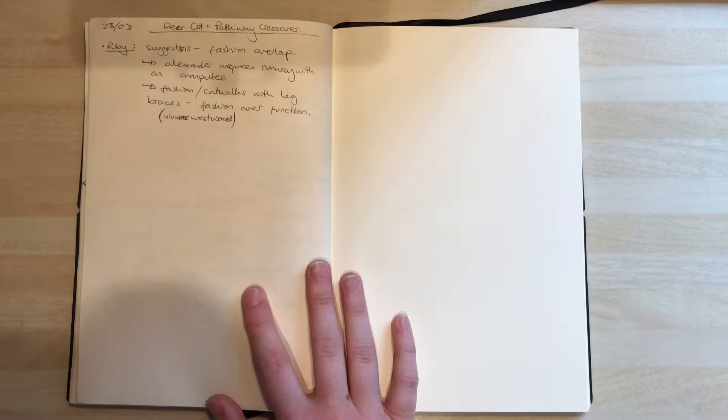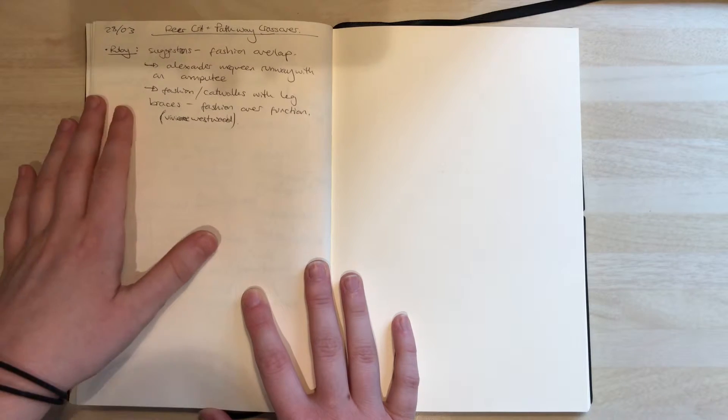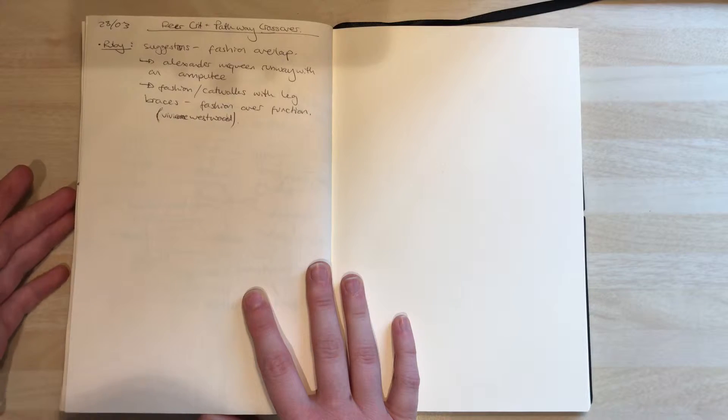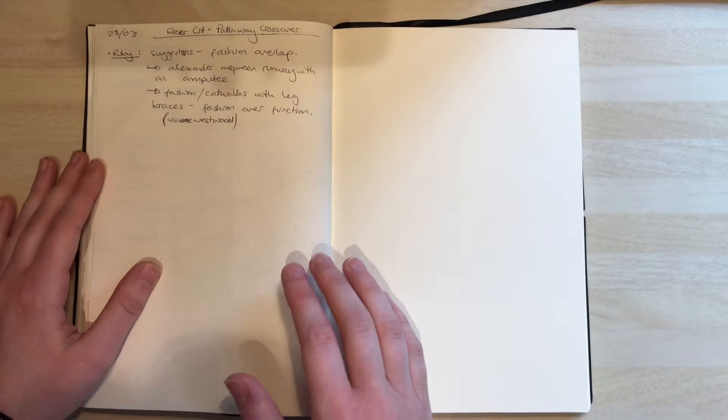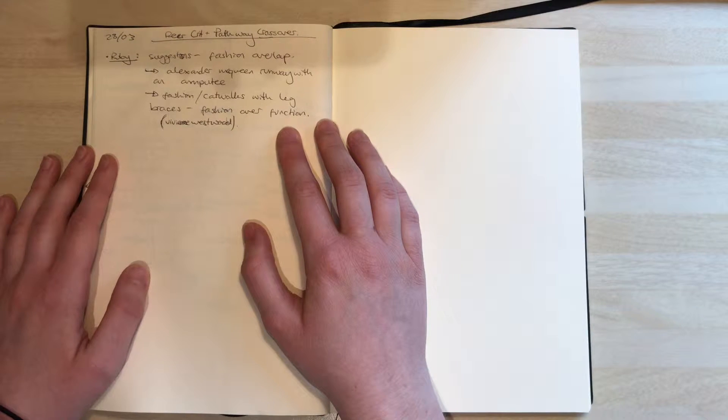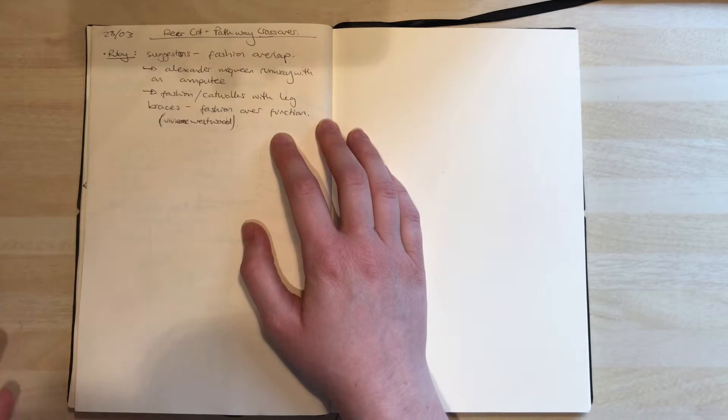Finally, the last little thing is the peer crit I did with Ruby. She's on the fashion course, so she has a totally different way of thinking about the ideas that I could make and my ideas for what she could make.